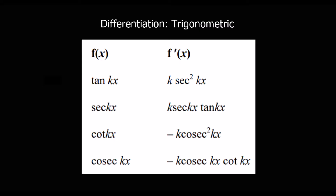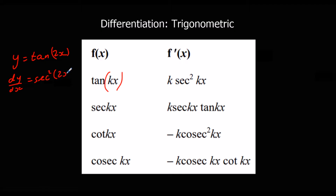In the formula book, you'll see there are k's in front of the x's, and this just shows us the chain rule. So if y equals tan 2x, we differentiate tan — tan goes to sec squared, giving sec squared 2x — and we multiply by the bracket differentiated, which is 2. So it's 2 sec squared 2x. The k's are showing us the chain rule applied to these functions.